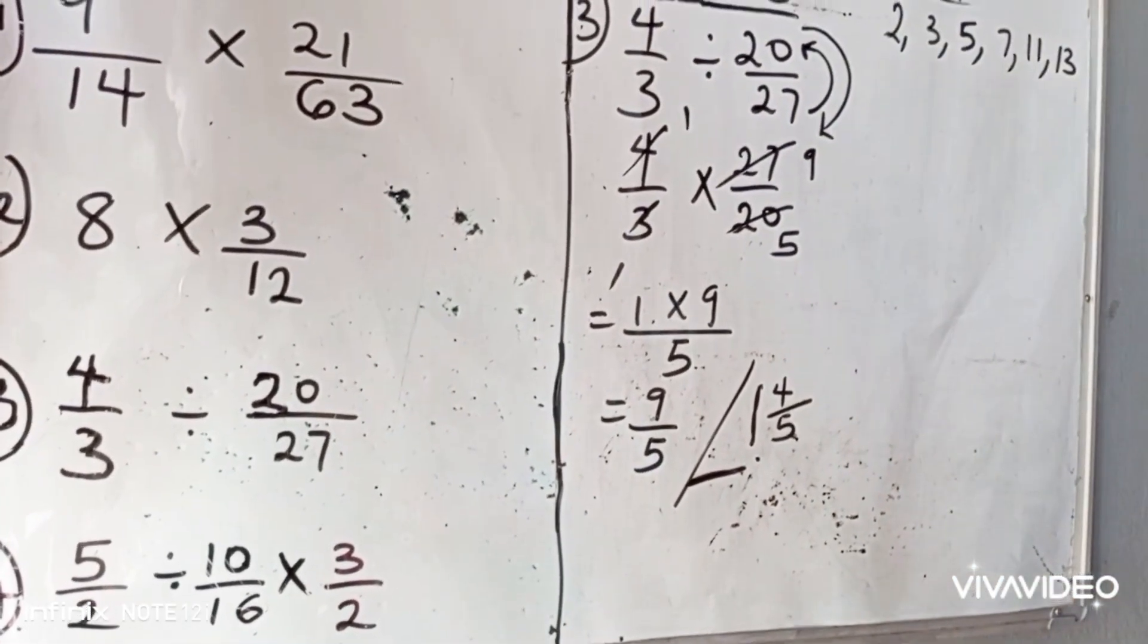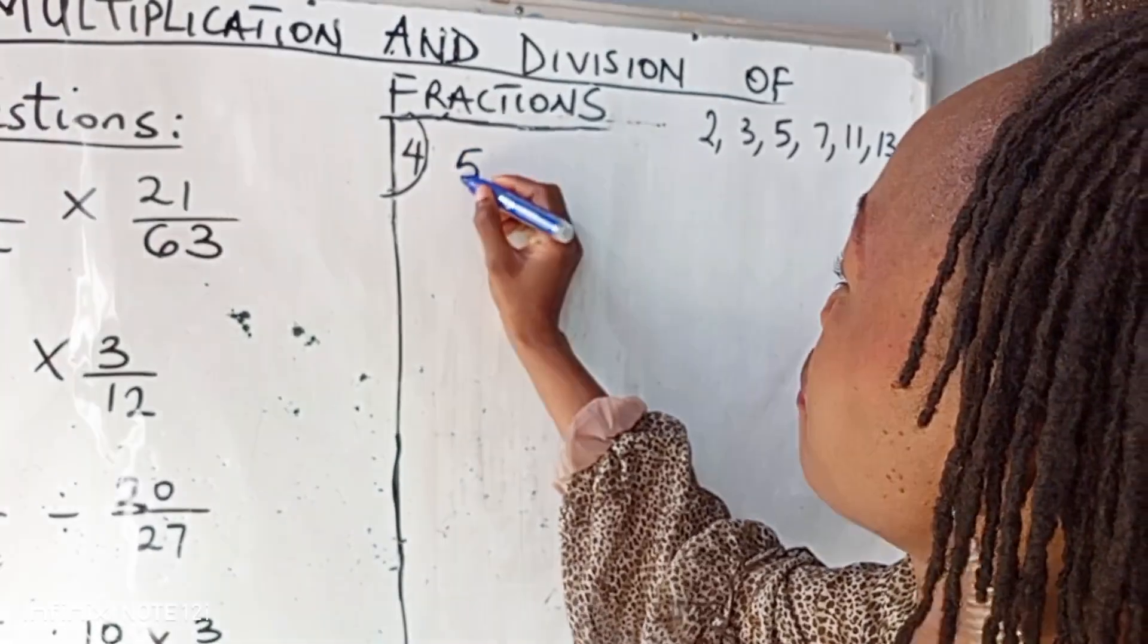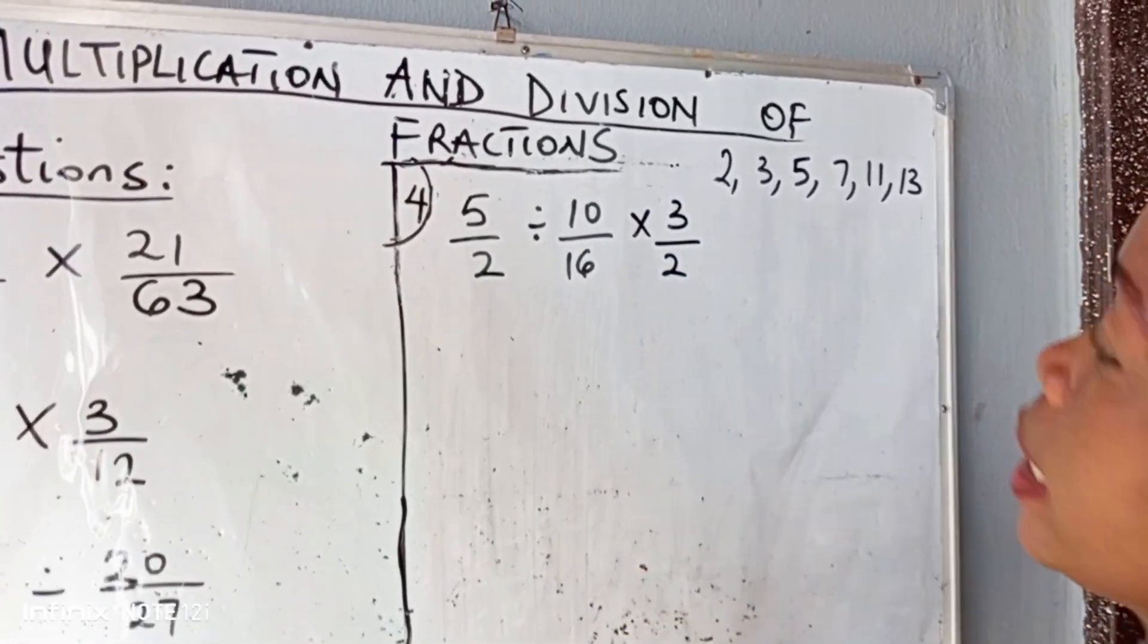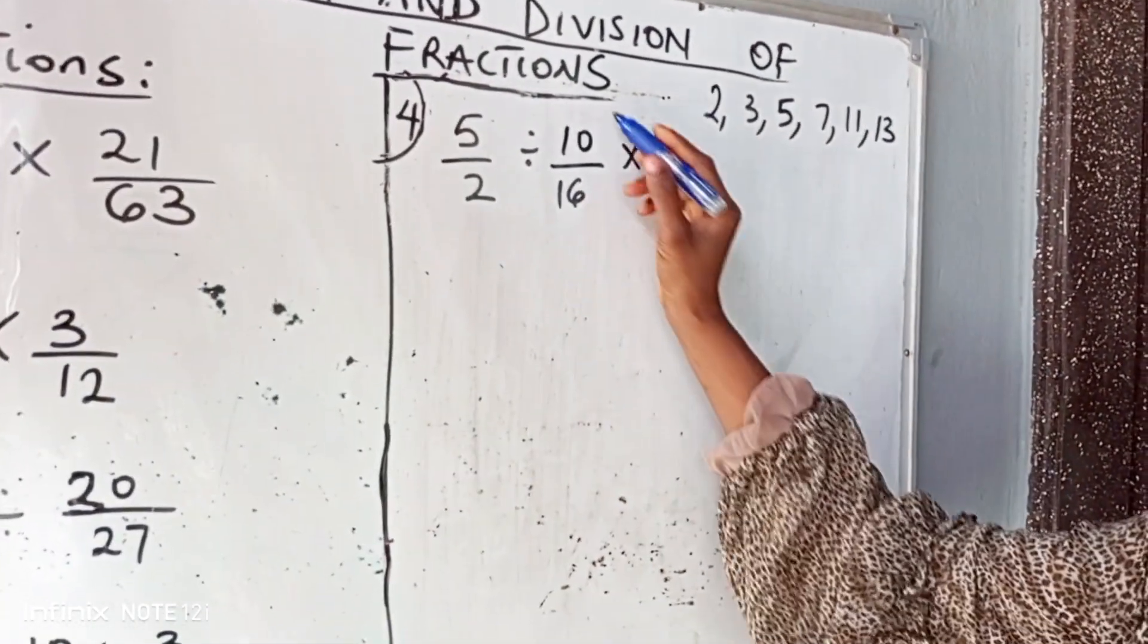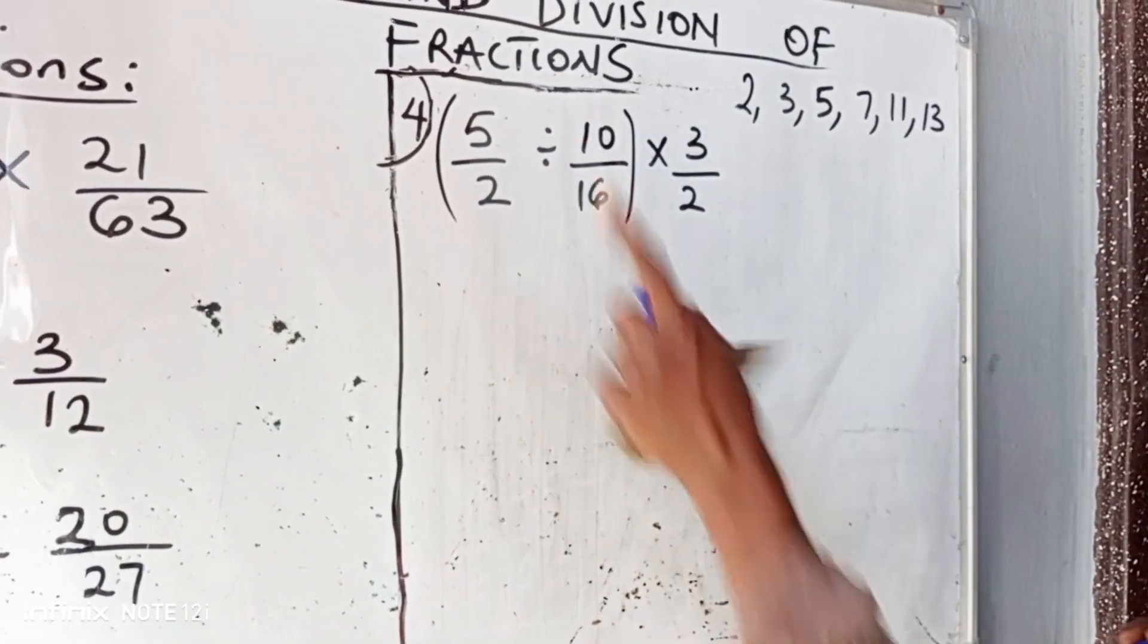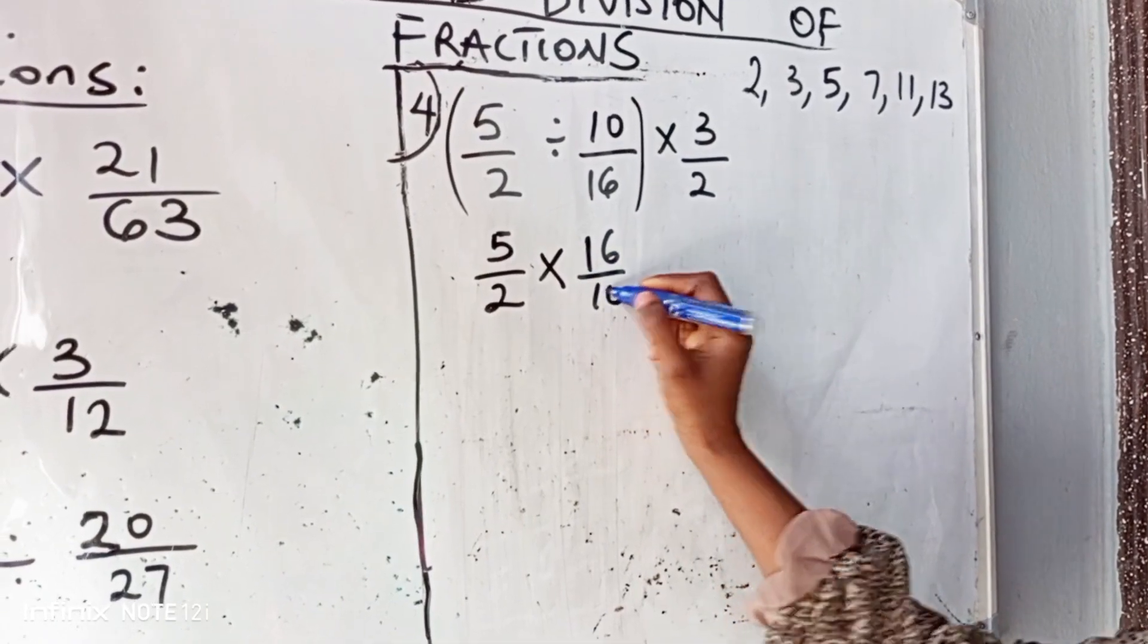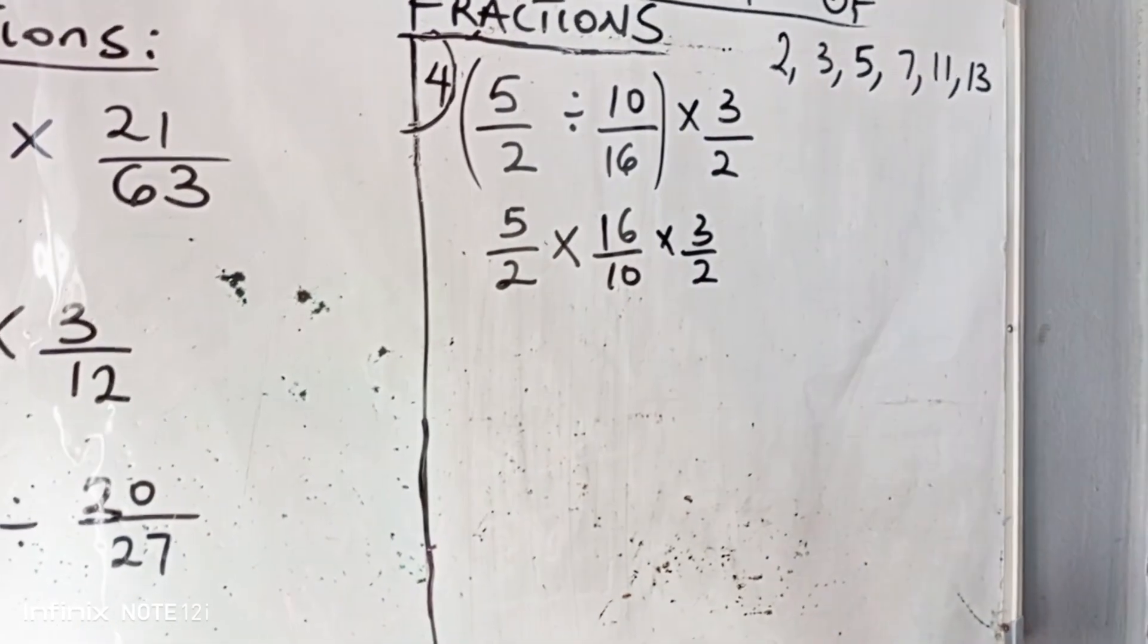Question number 4. We have 5 over 2 divided by 10 over 16 multiplied by 3 all over 2. Now using BODMAS, we know that division comes before multiplication. That means we need to solve this first. We need to change this to multiplication first before we continue. So we have 5 all over 2 multiplied by the inverse of this, which is 16 all over 10. Bring down this multiplied by 3 all over 2. So let's begin to reduce to lowest term.